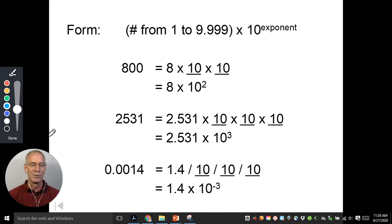And I'm sorry, this is all a little new to me. And the last one, we started here to get this between one and 10. We have to move one, two, three places over. And because we're moving this way, it gives us a negative three exponent on that.